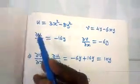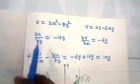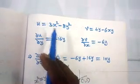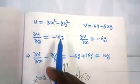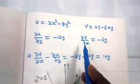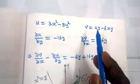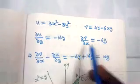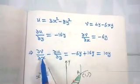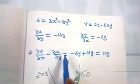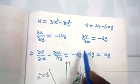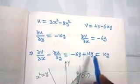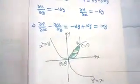Finding ∂u/∂y: differentiating u with respect to y, the 3x² term gives 0, and the 8y² term gives minus 16y. So ∂u/∂y equals minus 16y. Finding ∂v/∂x: in v equals 4y minus 6xy, the 4y term gives 0, and differentiating minus 6xy with respect to x gives minus 6y. So ∂v/∂x minus ∂u/∂y equals minus 6y minus (minus 16y) equals 10y.